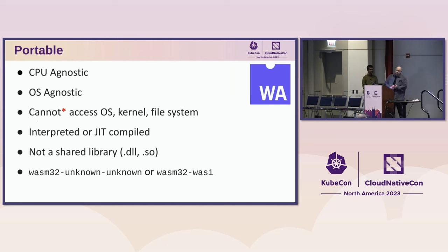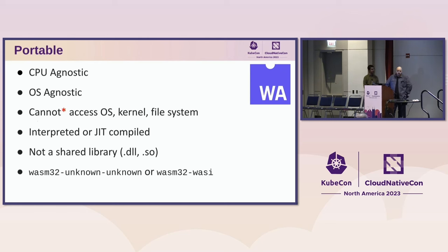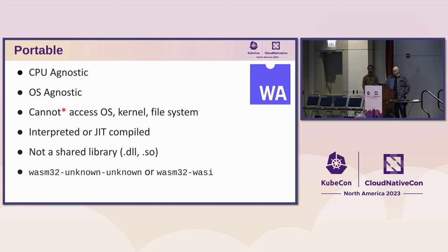When we say portable, that means WebAssembly is CPU and OS agnostic. It can't access the operating system or the kernel file system — I'll explain the asterisk there later. You can interpret the WebAssembly code or JIT compile it into native code, depending on your needs. WebAssembly modules are not supposed to be used as shared libraries — they're not a replacement for DLLs or .so files. When building on Rust, there are two different target types: one for regular WebAssembly and one for WASI.